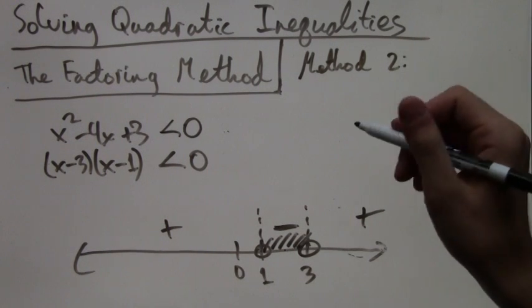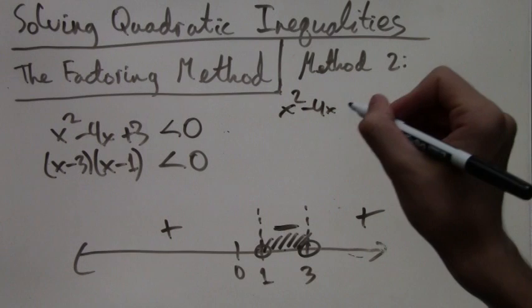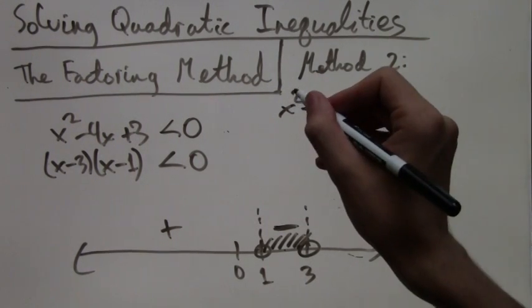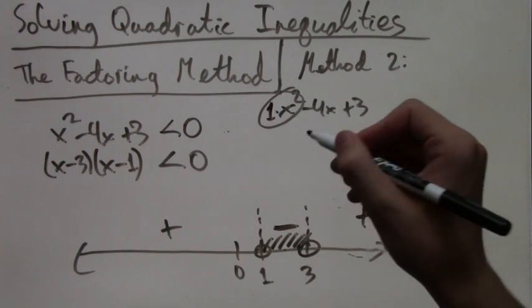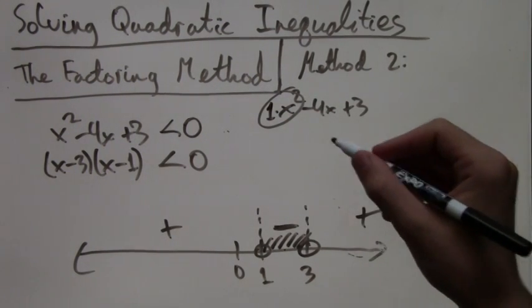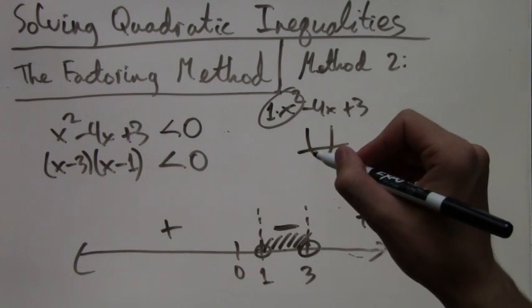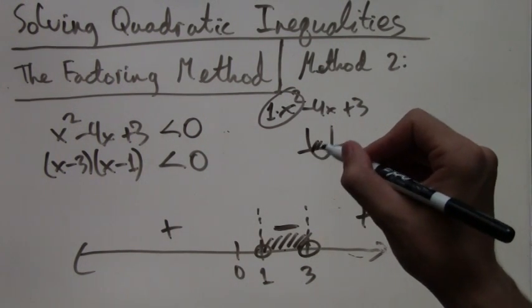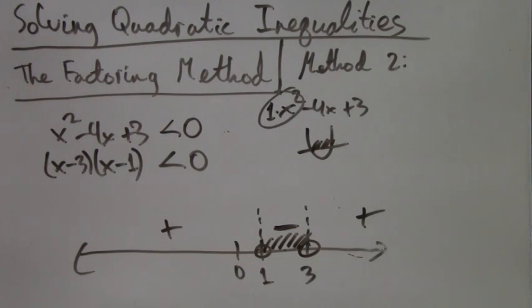Now here's a second method of getting the same answer. We look at the function x squared minus 4x plus 3. The coefficient of the x squared term is 1, which is positive. This tells us that the parabola of this function, its graph, would open upwards, which means that the negative portion has to be between the roots.